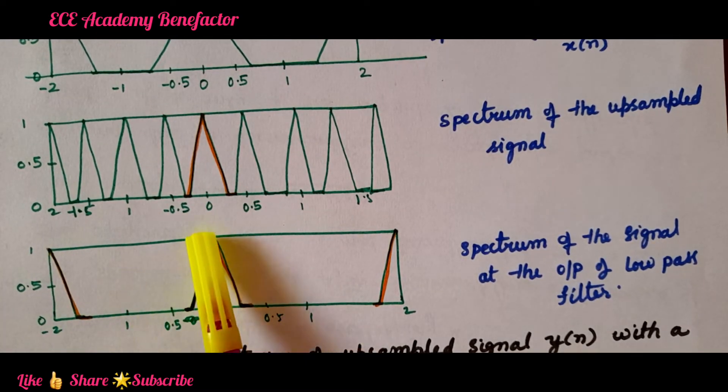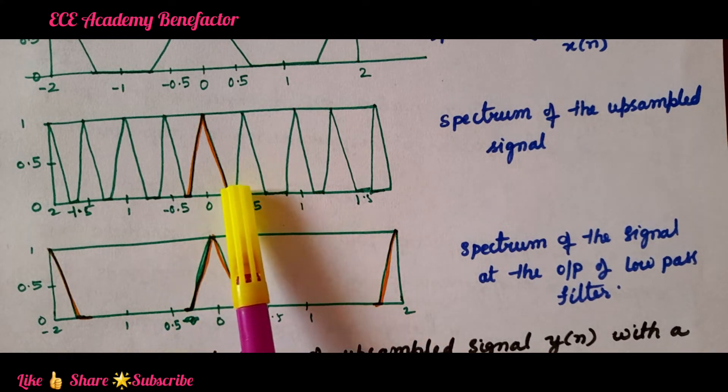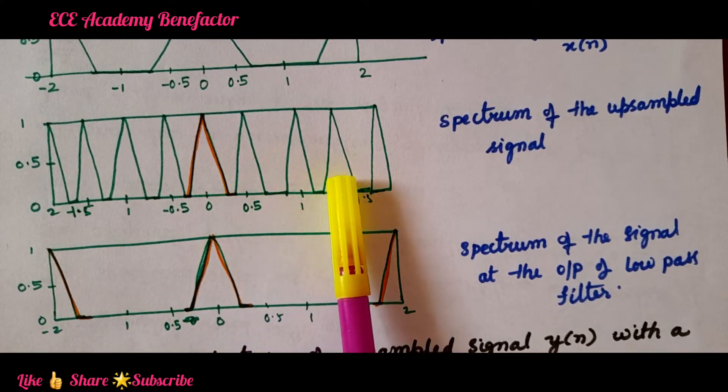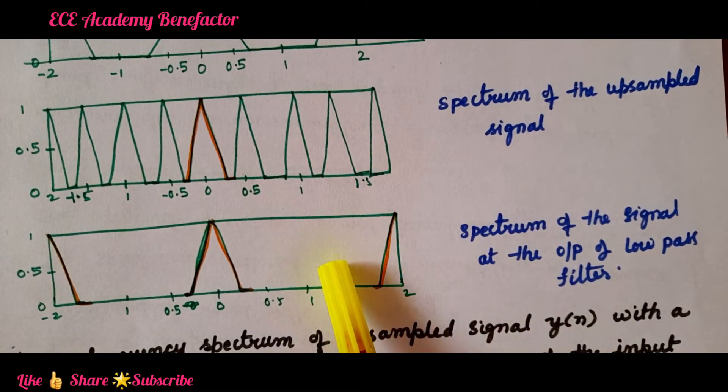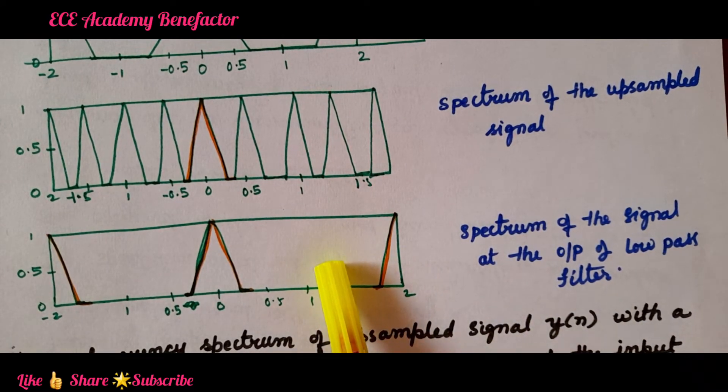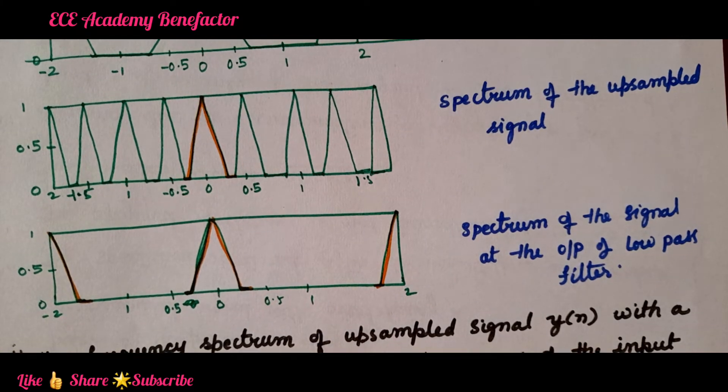If you are having a low pass filter of this spectrum, that is if its band limited to minus π/L to π/L, if you are taken a low pass filter of this spectrum what it will do? It will pass only this part of signal and will reject all other parts. In this way by using low pass filter anti-imaging filter we can remove the image spectrum.